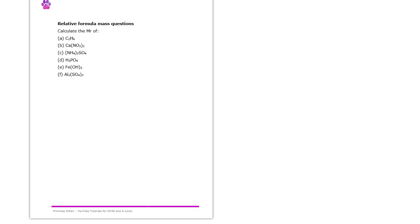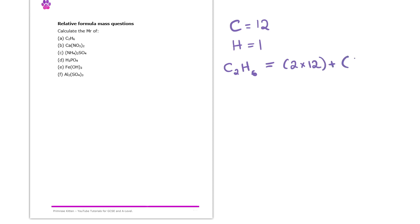Question A is finding the Mr of C₂H₆. To do this, we look at the periodic table and see that carbon has a mass of 12 and hydrogen has a mass of 1. We can look at the formula C₂H₆ and tell ourselves we have two of those 12s because we have two carbons, and we have six hydrogens. So we do two times 12, plus six times one, which gives us 30.